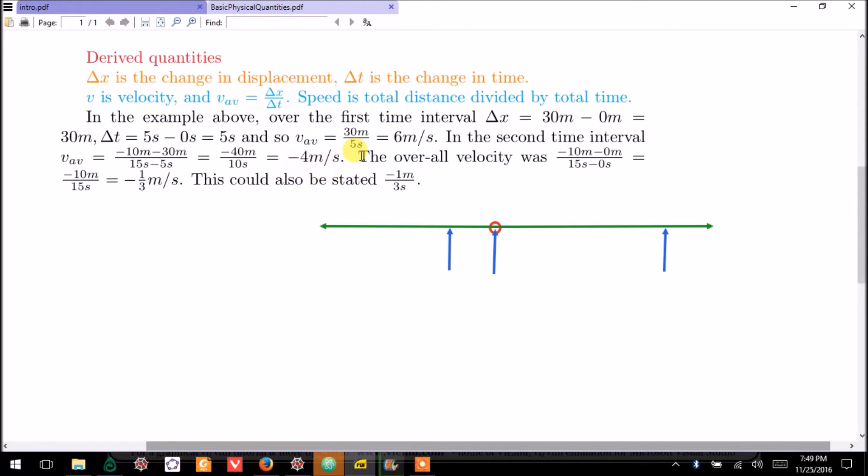Let's think about the overall average velocity. Well, in that case, it had a final displacement of negative 10 meters, an initial displacement of 0, a final time of 15, and an initial time of 0. We calculate the average velocity over that time period, and we could either write it as negative one-third meters per second, or we could say negative one meters every three seconds. Those two really just say the same thing. And this was the most basic introduction to physics.